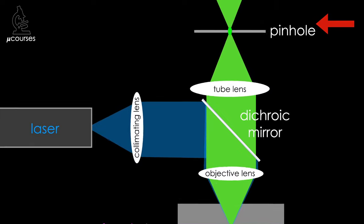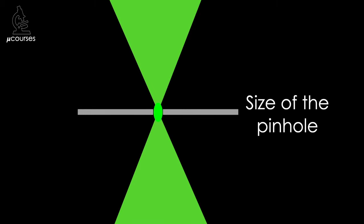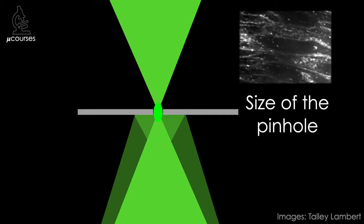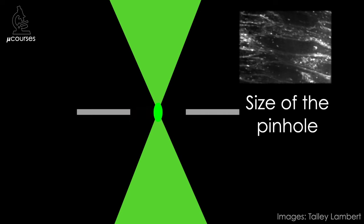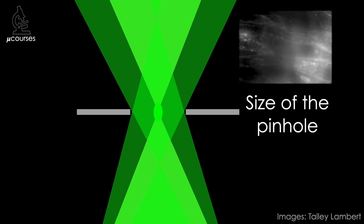Now let's look more closely at the pinhole, specifically how the size of the pinhole affects image quality. When the size of the pinhole matches the size of the image focused on the image plane, the maximum amount of out-of-focus fluorescence is blocked. As the diameter of the pinhole increases, more out-of-focus light is able to pass through, so the size of the pinhole is an important parameter in confocal microscope performance.